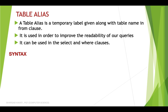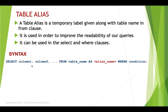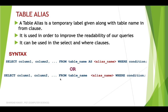The syntax of table alias: SELECT column1, column2, ... FROM table_name AS alias_name WHERE condition. After the table name put the AS keyword and then the alias name. There is also an alternative syntax — the AS keyword is not mandatory. You can just put a space between the table name and the alias name, and SQL will understand the renaming.